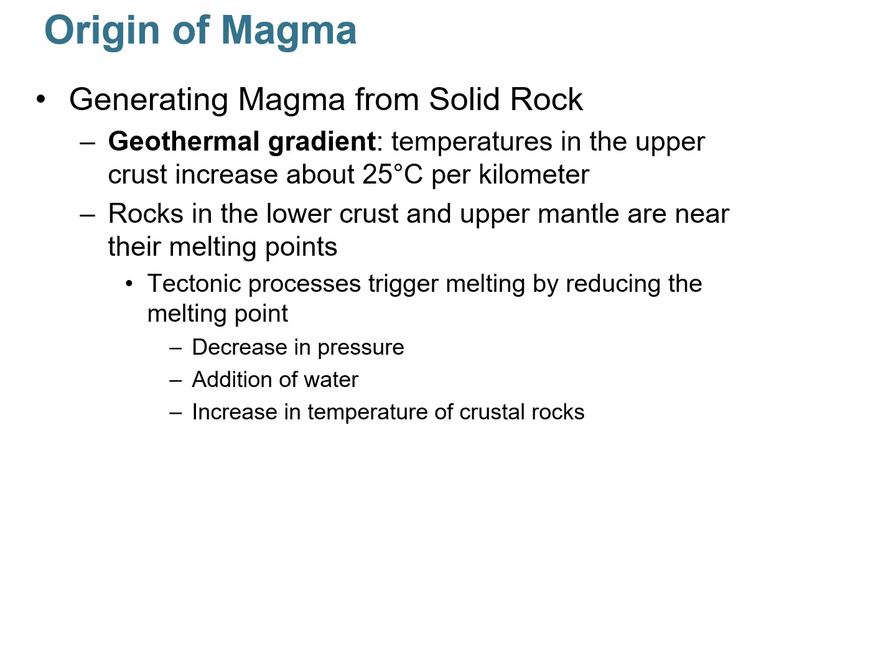The geothermal gradient measures how hot the Earth gets the deeper you go — typically about 25 degrees Celsius per kilometer. So as you go deeper and deeper within the Earth, every kilometer it gets 25°C warmer. Rocks in the lower crust and upper mantle are very close to their melting points, but experimental petrologists have shown that under normal geothermal gradient conditions, these rocks don't actually reach their melting temperatures. So there must be tectonic processes that trigger melting.